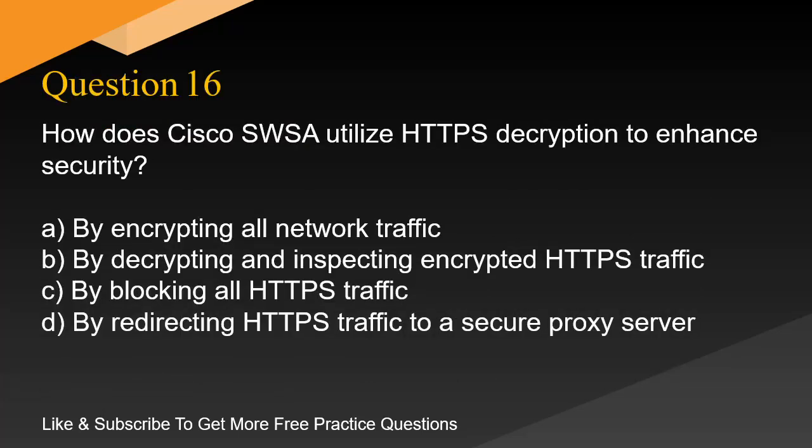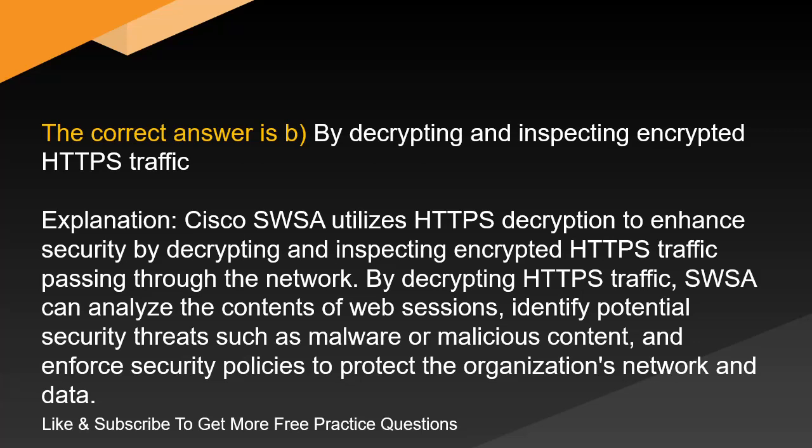Question 16. How does Cisco SWSA utilize HTTPS decryption to enhance security? A. By encrypting all network traffic. B. By decrypting and inspecting encrypted HTTPS traffic. C. By blocking all HTTPS traffic. D. By redirecting HTTPS traffic to a secure proxy server. The correct answer is B. By decrypting and inspecting encrypted HTTPS traffic. Explanation. Cisco SWSA utilizes HTTPS decryption to enhance security by decrypting and inspecting encrypted HTTPS traffic passing through the network. By decrypting HTTPS traffic, SWSA can analyze the contents of web sessions, identify potential security threats such as malware or malicious content, and enforce security policies to protect the organization's network and data.